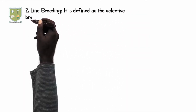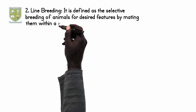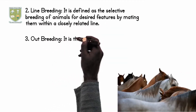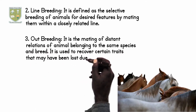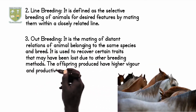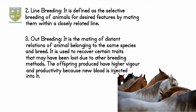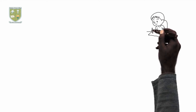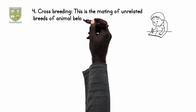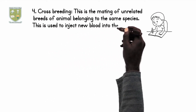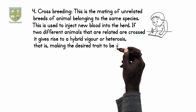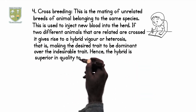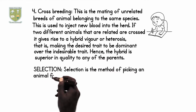2. Line Breeding: It is defined as the selective breeding of animals for desired features by mating them within a closely related line. 3. Outbreeding: It is the mating of distant relations of animals belonging to the same species and breed. It is used to recover certain traits that may have been lost due to other breeding methods. The offspring produced have higher vigor and productivity because new blood is injected into it. 4. Cross-breeding: This is the mating of unrelated breeds of animals belonging to the same species. This is used to inject new blood into the herd. If two different unrelated animals are crossed, it gives rise to hybrid vigor or heterosis, making the desired trait dominant over the undesirable trait. Hence, the hybrid is superior in quality to any of the parents.